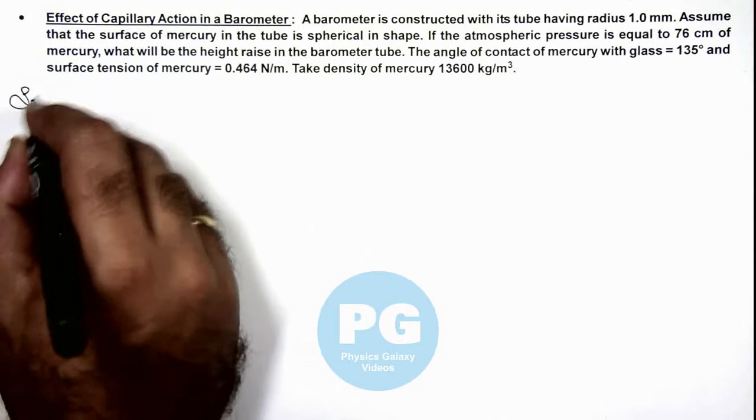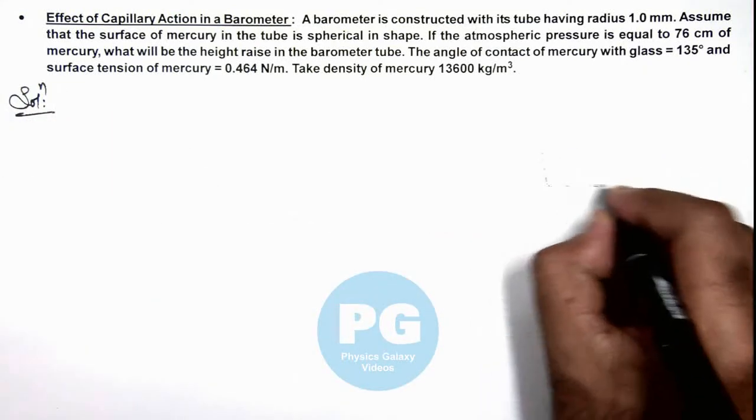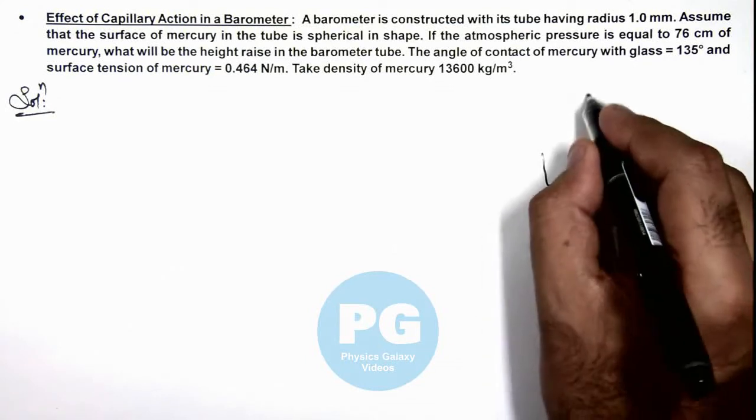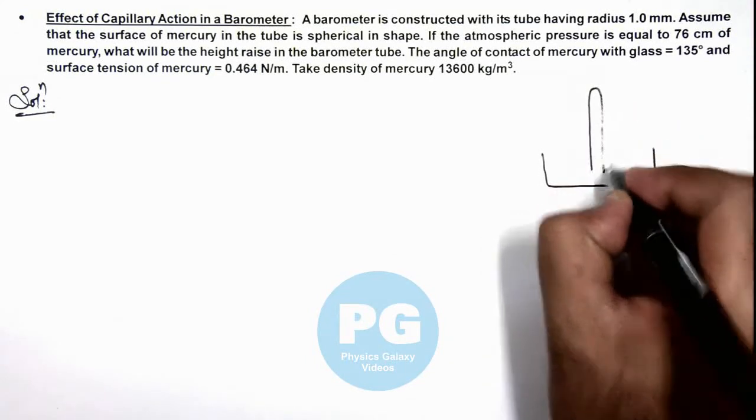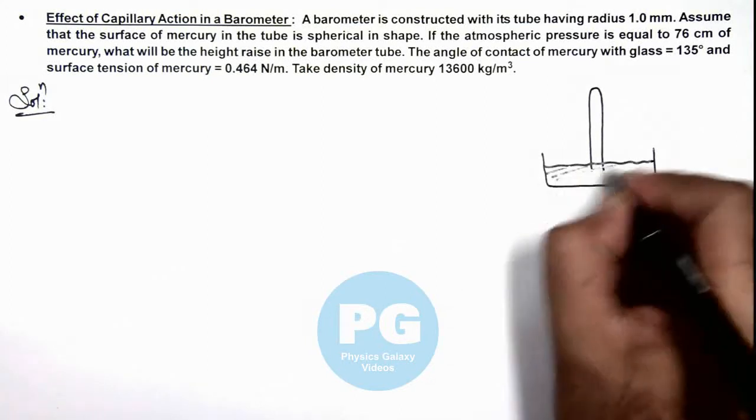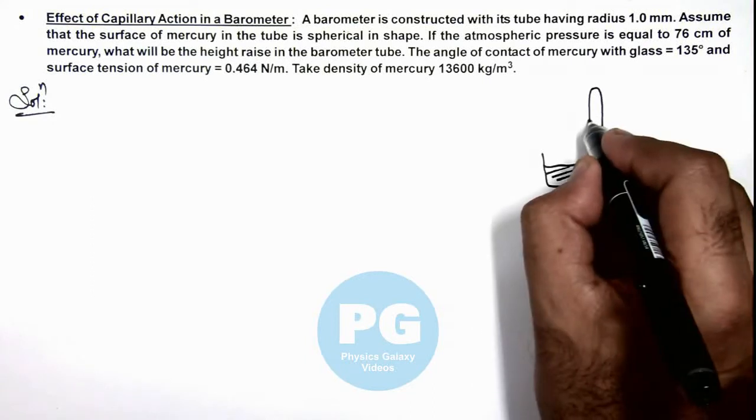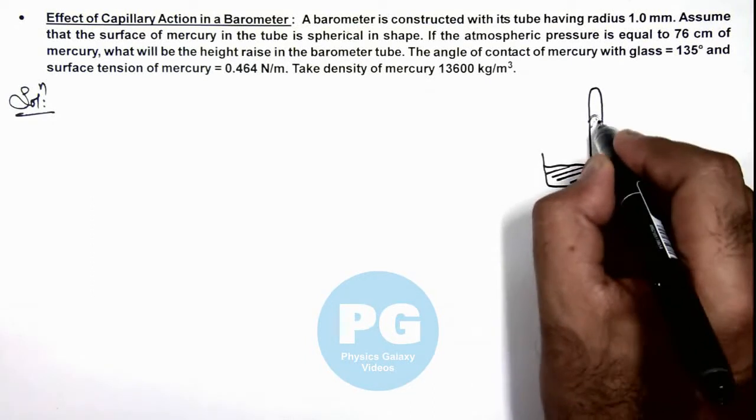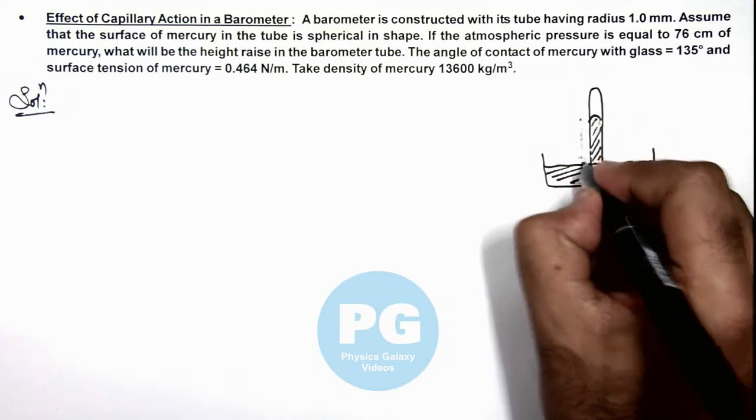In the solution, if we draw the figure of a barometer, in a container an inverted tube is placed which is dipped in mercury. Due to the vacuum in the tube, mercury rises up, and say it rises to a height h.